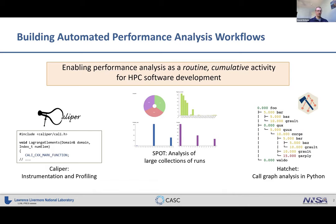The three tools we have to implement this approach are: Caliper, an instrumentation and profiling library; Spot, a web visualization toolkit for analyzing large collections of runs; and Hatchet, a Python library for call graph analysis. A typical use case is performance regression testing — you instrument your application with Caliper, run performance tests that regularly collect data during nightly unit testing, use Spot to compare how performance evolved over time, and develop custom analysis scripts in Hatchet to study certain aspects in detail.